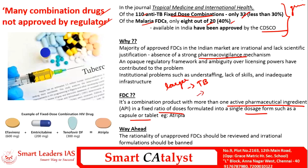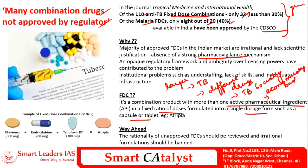Though TB affects mainly the lungs, it has effects on different parts of the body, so different drugs are needed. Most TB patients fall in socially and economically underprivileged groups and lack awareness about consuming different doses of drugs at different times, making fixed dose combinations more important to help them complete their course of prescription. The pharmacovigilance mechanism in India is in a very weak state, compounded by structural problems like understaffing, lack of skills among health workers, and inadequate infrastructure for health centers.